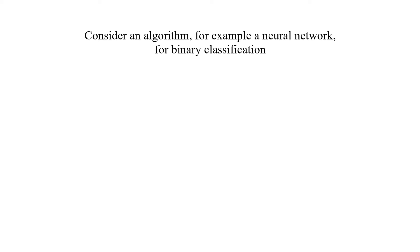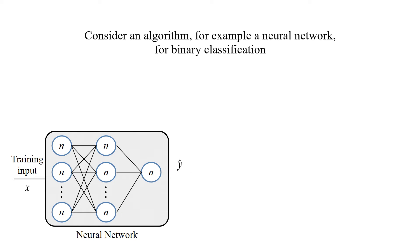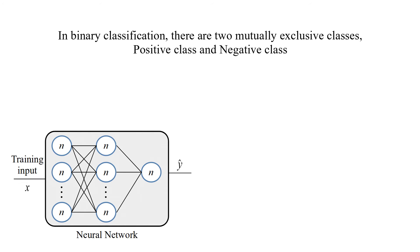Consider an algorithm, for example a neural network, for binary classification. Each circle with n denotes a neuron. In binary classification, there are two mutually exclusive classes, positive class and negative class.